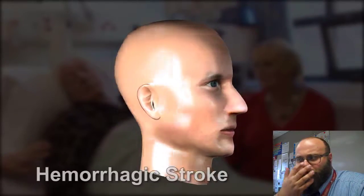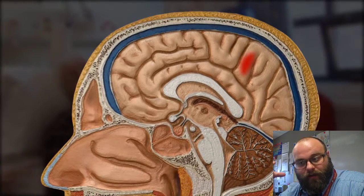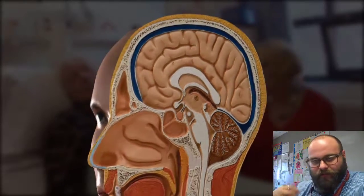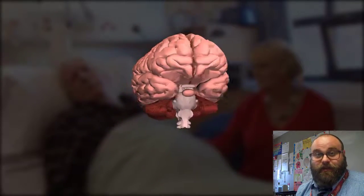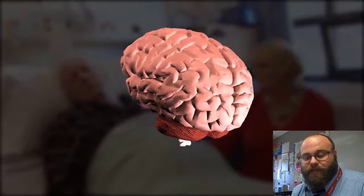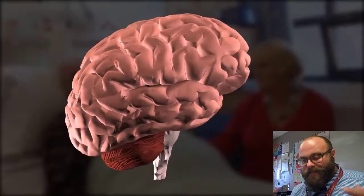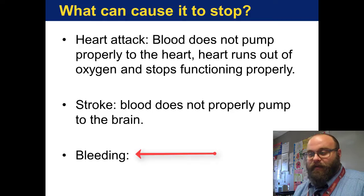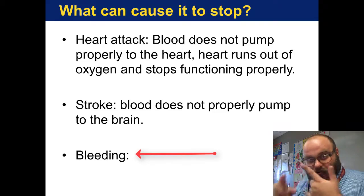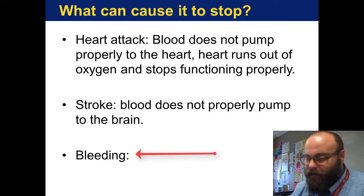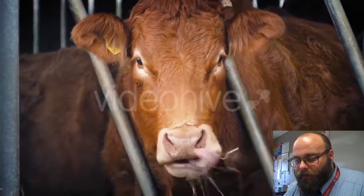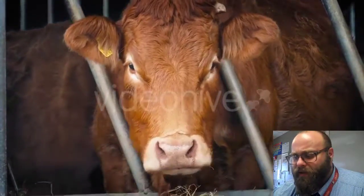Bleeding can also affect the flow of blood. If you bleed enough, your blood pressure will go down — there's less blood in your system. Your circulatory system is a closed system, and if it opens up in a way it's not intended to, this can impact all of these functions. It can even trigger a stroke or a heart attack. That's it for blood flow.